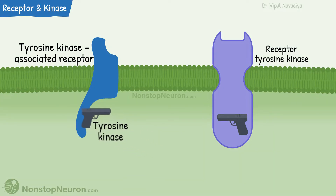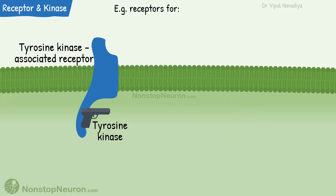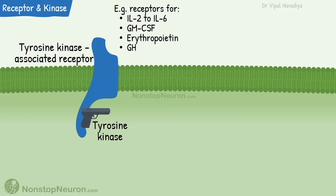Despite this difference, receptor tyrosine kinase and tyrosine kinase associated receptors work in much a similar manner. Examples of tyrosine kinase associated receptors are receptors for some cytokines like interleukin-2 to interleukin-6, granulocyte macrophage colony-stimulating factor, erythropoietin, growth factor, prolactin, etc.